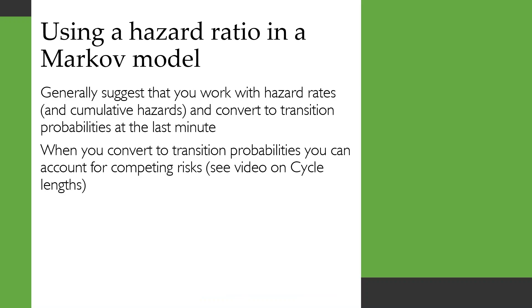And I would generally suggest that you work with hazard rates and cumulative hazards and only convert to transition probabilities at the last minute when you really actually need them. And then when you convert to transition probabilities, you can account for competing risks. I had a previous video on cycle lengths where you can see how that is done.